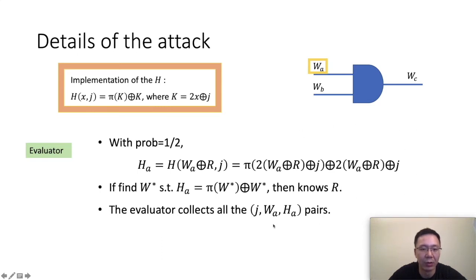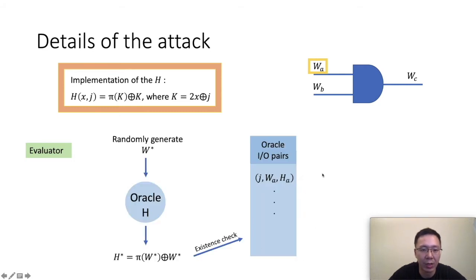So for each AND gate, the evaluator knows one of these pairs. Then for the whole circuit, the evaluator can collect all these pairs and make it into a table. And here is how the attack goes. When the evaluator is controlled by an adversary, the adversary will randomly generate a W*. Then it puts this in the hash oracle. And the oracle gives an output of this H*. Then it will check if this H* happens to equal to one of the H_A here. If it does, there's a chance that it can reverse the term we just saw and gets R. Then it will just break the whole circuit.